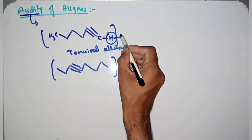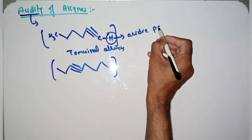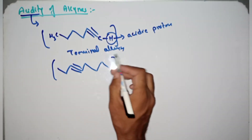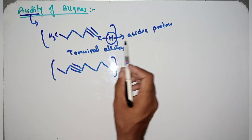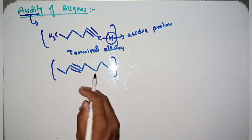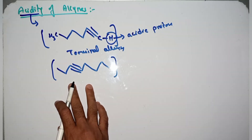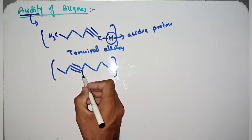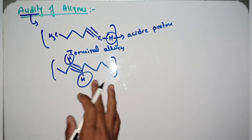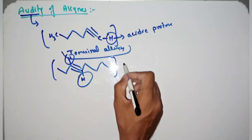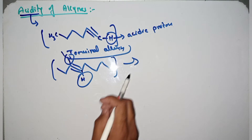A terminal alkyne should contain one hydrogen atom, and this hydrogen atom is called an acidic hydrogen or acidic proton. The hydrogen or proton attached to the terminal alkyne is called an acidic proton. In the case of an alkyne where the triple bond is present between carbons in the long chain, there is no hydrogen present, so these alkynes cannot undergo any acidic or basic reaction.